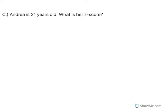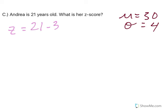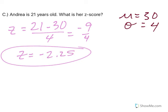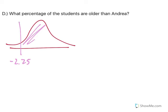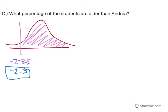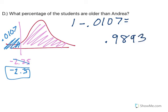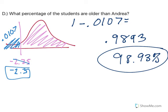Same information: the mean is 30, standard deviation is 4. Andrea is 21 — what's her z-score? 21 minus 30 divided by 4: negative 9 over 4 gives a z-score of negative 2.25. What percentage of students are older than Andrea? A z-score of negative 2.25 puts her to the left. Older is area to the right. The table doesn't have negative 2.25, so round to negative 2.3, which gives 0.0107. Since the table gives area to the left, to find area to the right, take 1 minus 0.0107, giving 98.93% of students are older than Andrea.